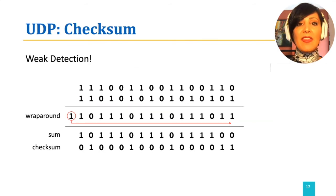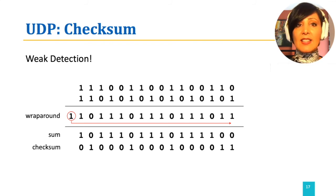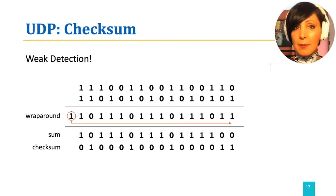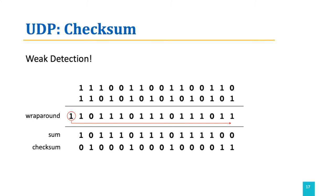It is important to note that checksum is a weak mechanism for error detection. This is because it is only deciding on the sum of all values, and if there are enough number of bit flips to nullify the effect on the sum, the receiver would not be able to detect the error. For example, in the depicted calculation, if the last two bits of the second word are flipped, the sum would reflect the error. However, if the last two bits of both of the words are flipped, even though different values are in the original 16-bit words, the checksum value will not be changed, and therefore no error would be detected.